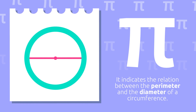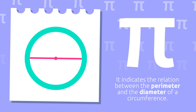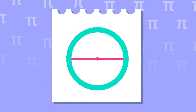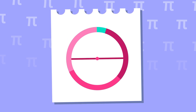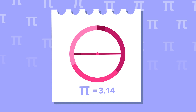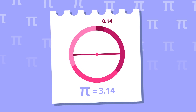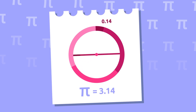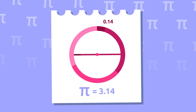It's about fitting the diameter as many times as possible into the perimeter of the circumference. Let's look here: one, two, three, and a little bit more. We can fit three diameters into the circumference and a small part — point one four. That's why we know that pi equals 3.14.